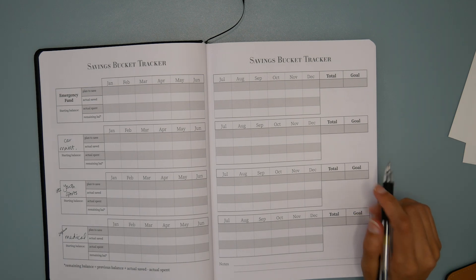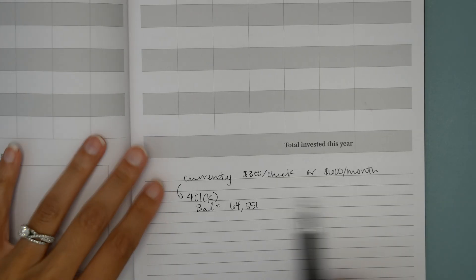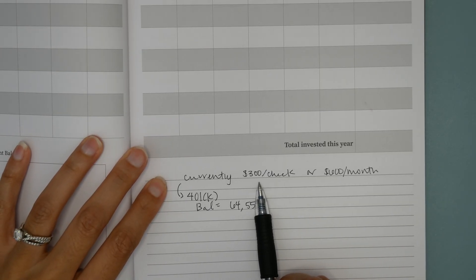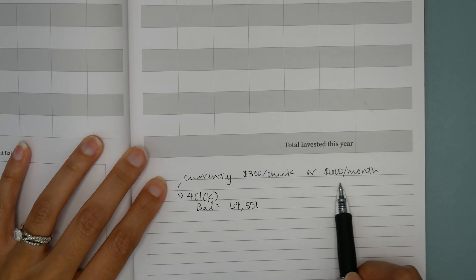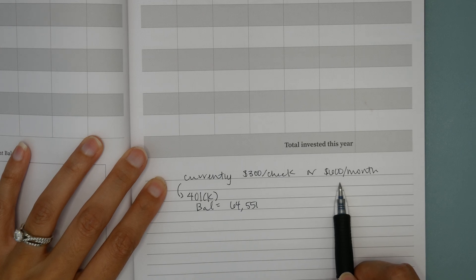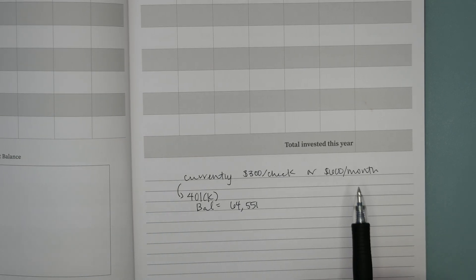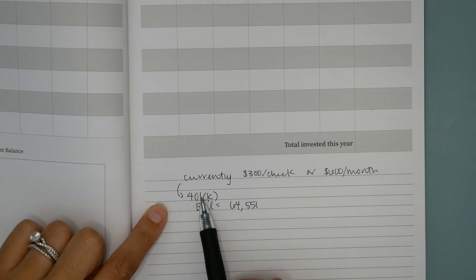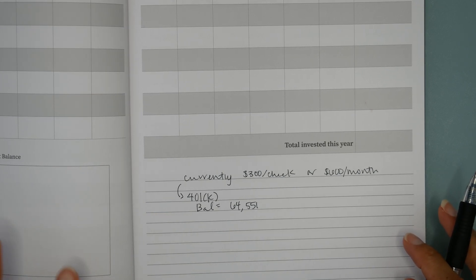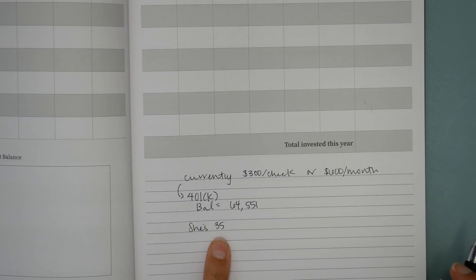We're going to touch on one more aspect of her finances, which is her investing. She's currently contributing $300 per paycheck, or that would be $600 per month because she's paid semi-monthly, always on the 1st and the 16th. So $600 a month going into her 401k. The current balance of that account is about $65,000. And this is her only investment account. Let's keep in mind, she's 35.